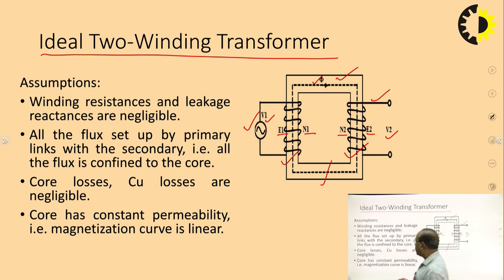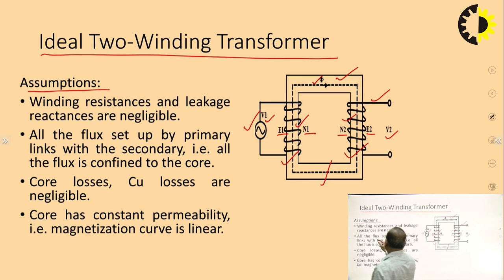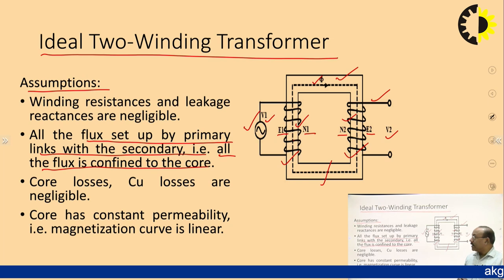There are some assumptions for an ideal transformer. First, winding resistances and leakage reactances are negligible — both windings have negligible resistance and leakage reactance of inductive nature. Second, all the flux set up by the primary winding links with the secondary winding — all flux is confined in the core, meaning there is no leakage of flux. That is why the leakage reactance of the ideal transformer is zero.